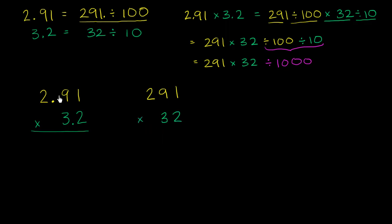Notice, I've just essentially rewritten this without the decimals. But of course these are different quantities. To go from this product to this product, I have to divide by 1,000. But let's just think about this. We already know how to compute this type of thing.